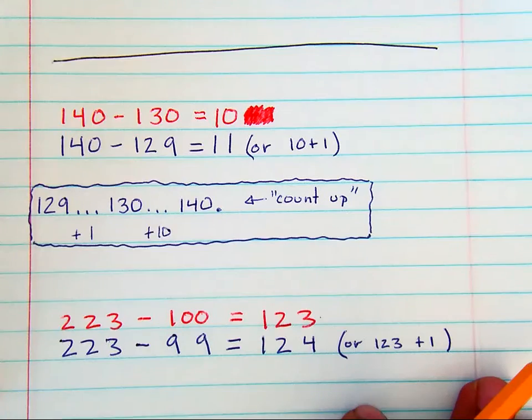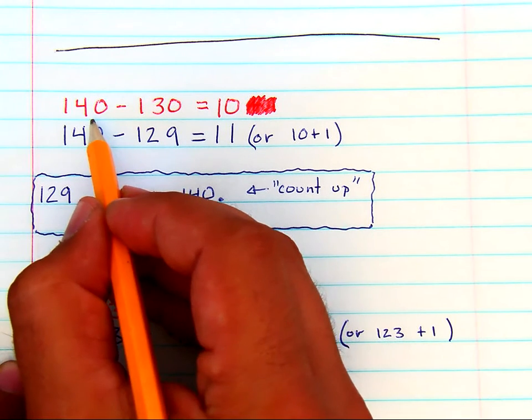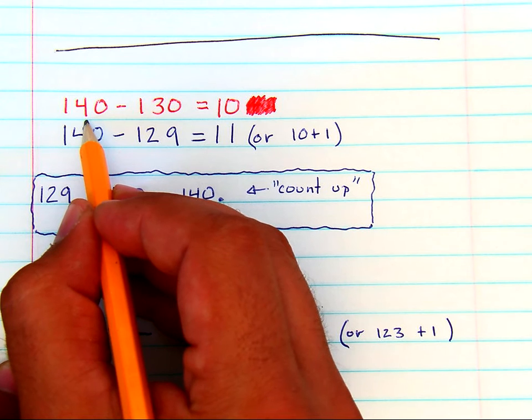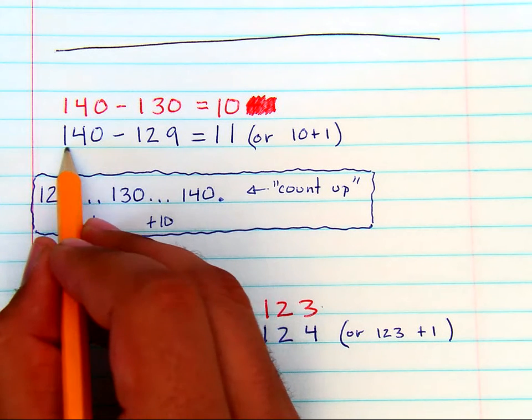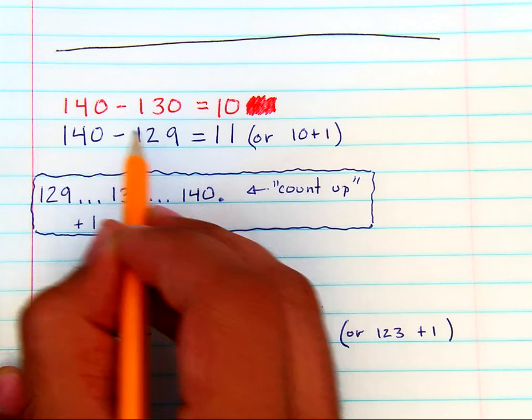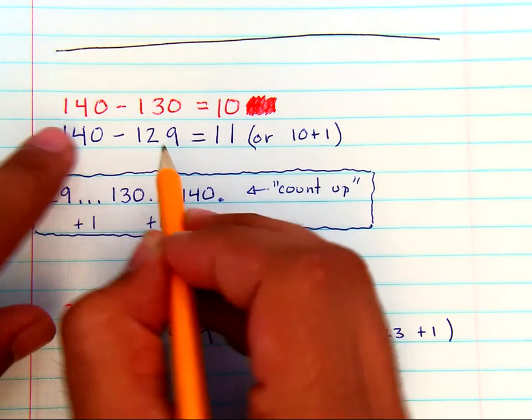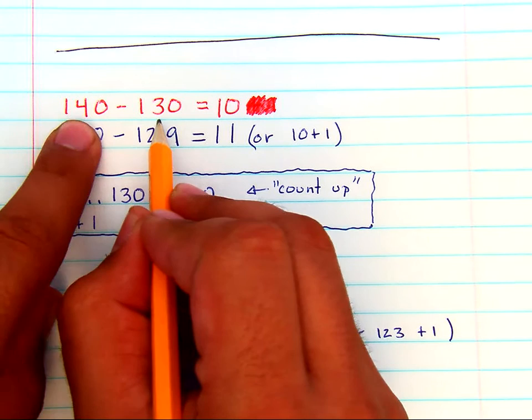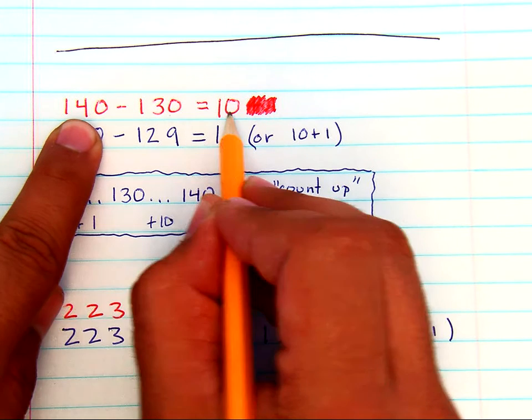Now when you get into larger numbers, it's the same standard, it's the same skill, just with larger numbers, so don't let too many numbers fool you. 140 minus 129 might be difficult to do in your head, but if you consider adding 1 to this number, to 129, 140 minus 130 is really easy.